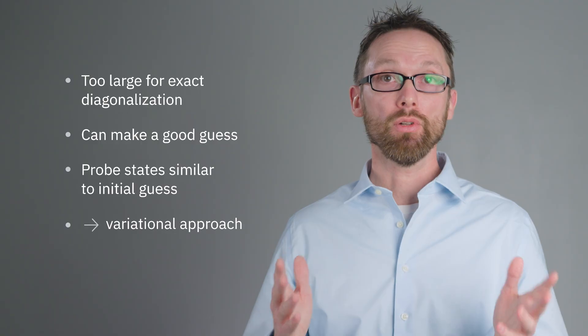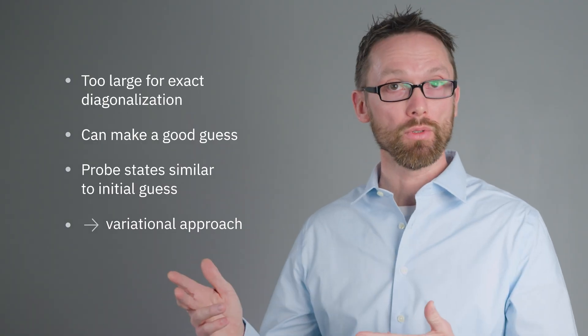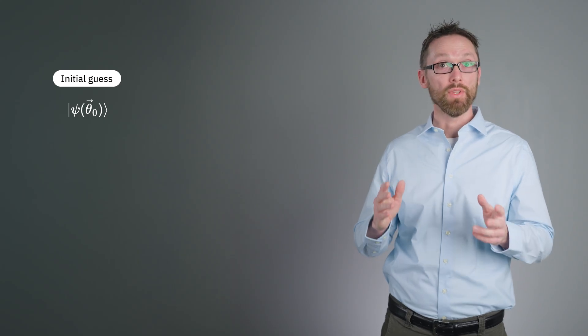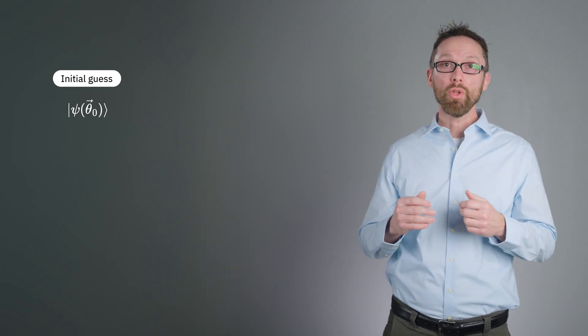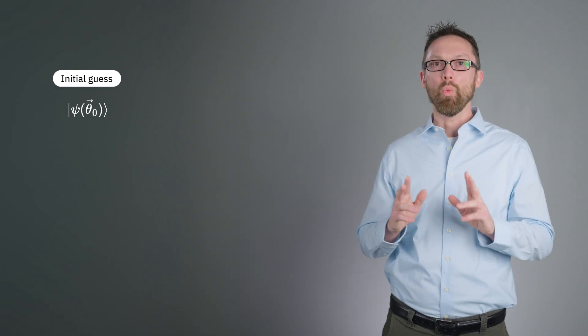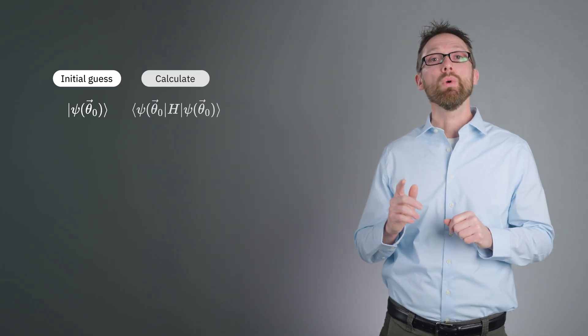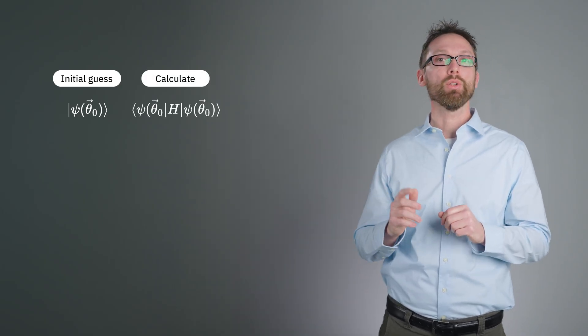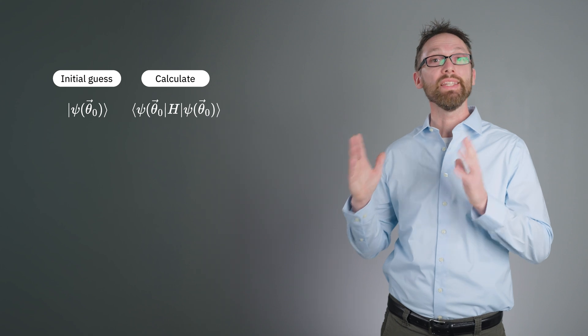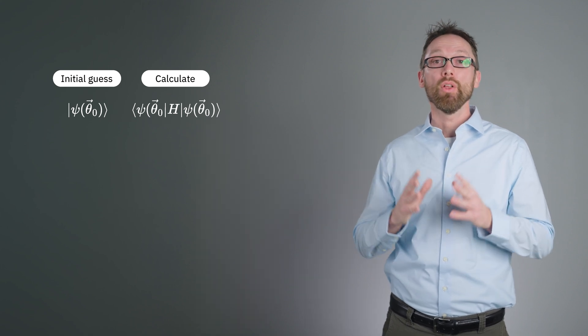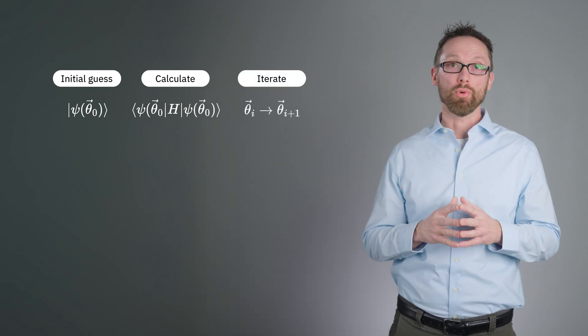Using a classical computer, this would work as follows. First, you make a guess state with some parameters θ that you will vary. Although this initial guess could be random, that is not advisable. We want to use knowledge of the problem at hand to tailor our guess as much as possible. Second, we would calculate the expectation value of the operator with the system in that state. Third, we would alter the variational parameters and repeat.